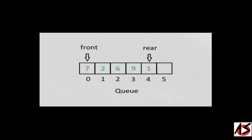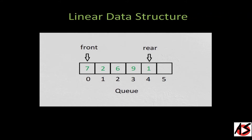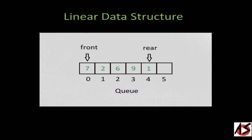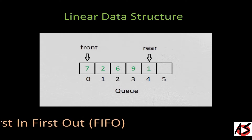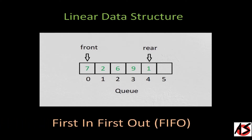Today we will learn about Queue. A Queue is a linear data structure, that means data is stored in a single line one by one without any branches. It follows a particular order in which the operations are performed. Insertion is done from the rear end or the tail and deletion is done from the front end or head. The order is first in first out, commonly known as FIFO.